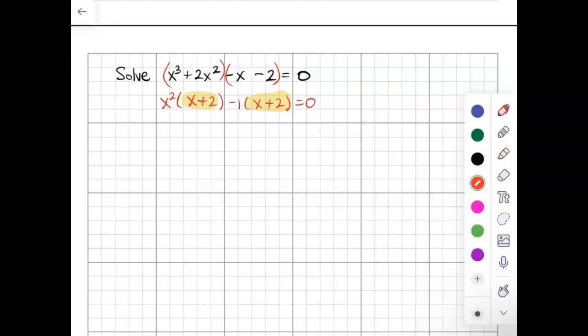So if you factor that common factor out, you get x plus 2. And what's on the outside and what's left is the x squared and the minus 1. And so that is how you can factor a four-term polynomial into two binomials there.